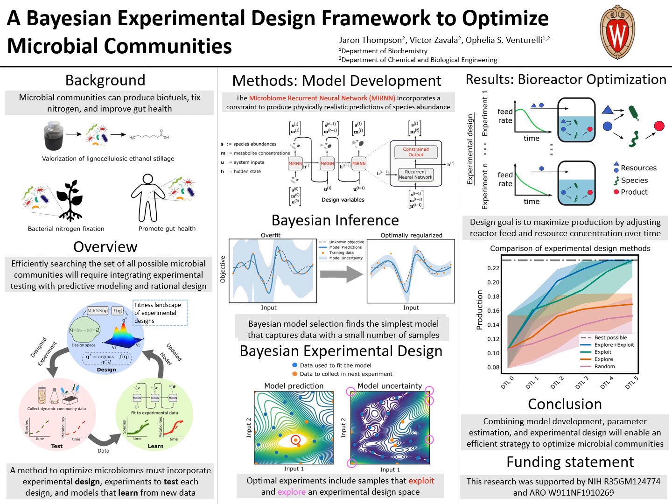Improving our ability to seek microbial communities with optimized functions will require an iterative design-test-learn strategy that incorporates optimal design of experiments, experimental validation, and the development of flexible models that can learn from experimental data. The proposed method combines new strategies towards model development, Bayesian inference, and experimental design.